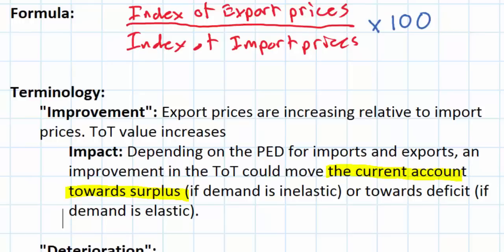If, on the other hand, demand for imports and exports is elastic, then an improvement in the country's terms of trade could actually move its current account towards deficit as net exports decrease, due to the highly responsive nature of foreign consumers leading them to consume a dramatically smaller quantity of the country's exports as export prices rise. So an improvement in the terms of trade does not necessarily help the nation's net exports and aggregate demand — whether it improves the current account balance depends on whether demand for the country's exports and imports is inelastic or elastic.